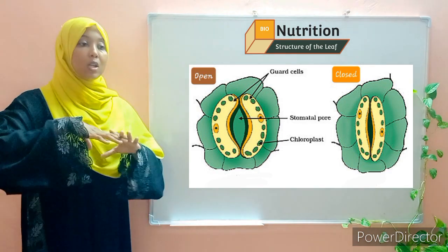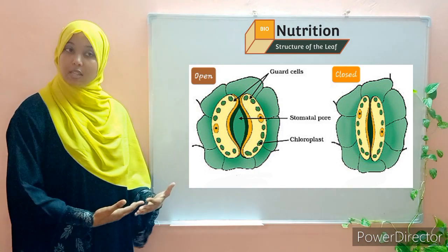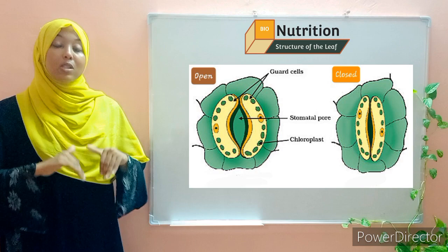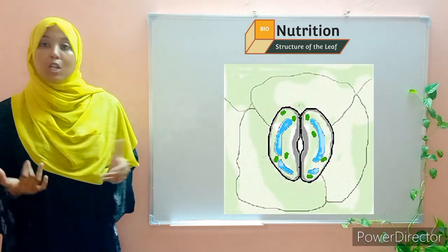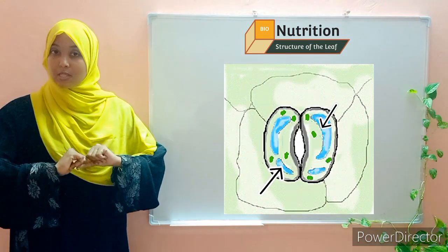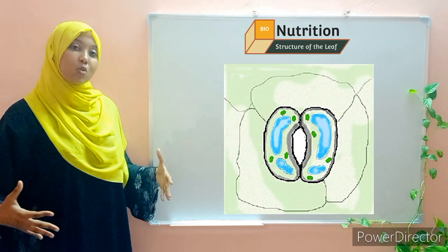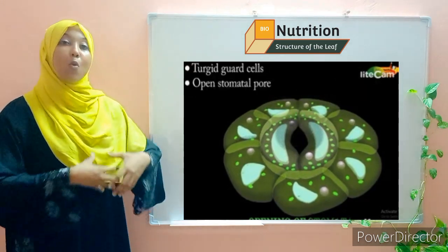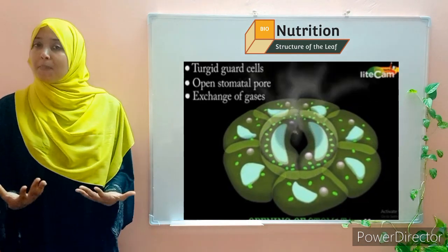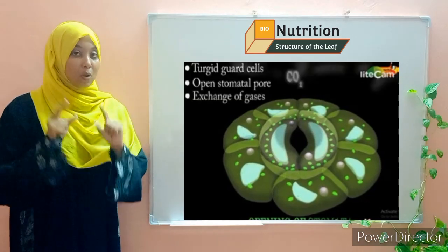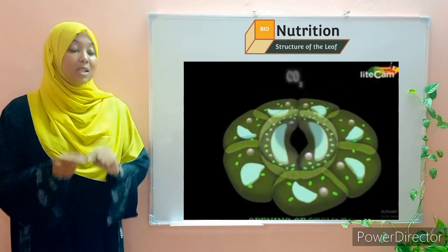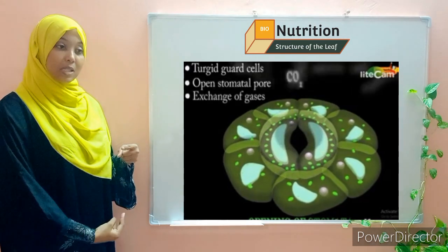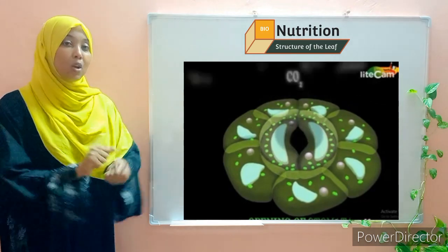During the day, guard cells carry out photosynthesis due to their chloroplasts, producing sugars — simple carbohydrates. These sugars cause the guard cells to become hypertonic to the surrounding cells, so they draw in water by osmosis, causing them to bulge outwards and open the stoma. When the stoma is open, gaseous exchange takes place — gases diffuse in and out of the plant. The reason guard cells have chloroplasts is so they can control their osmotic properties and thereby control the opening and closing of the stomata.